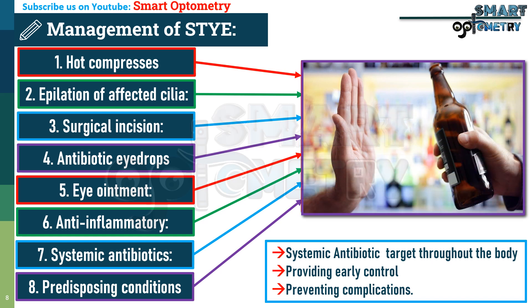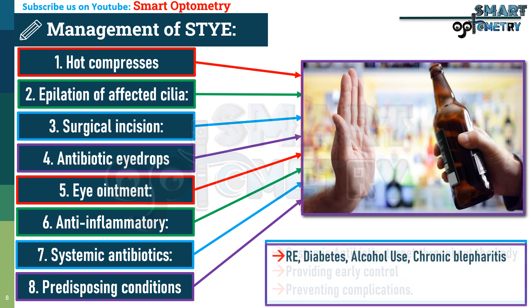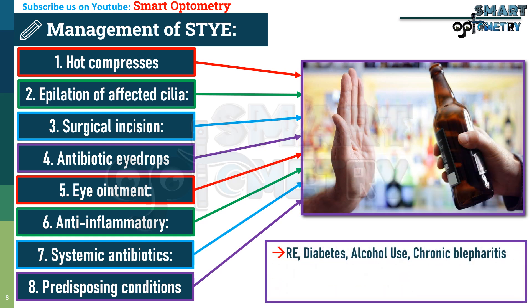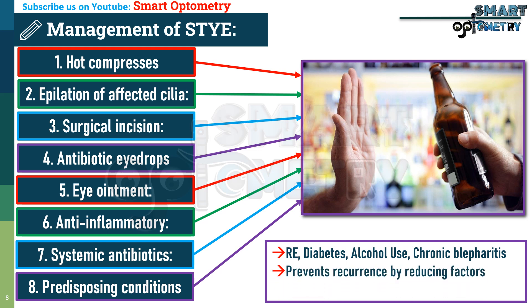Eighth, treatment of predisposing conditions is essential. Addressing underlying causes such as uncorrected refractive error, diabetes, alcohol use, and chronic blepharitis prevents recurrence by reducing factors that contribute to stye formation.